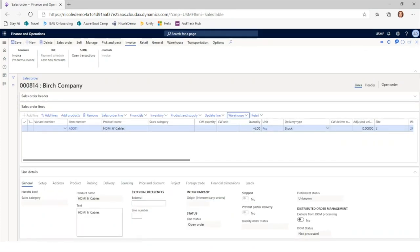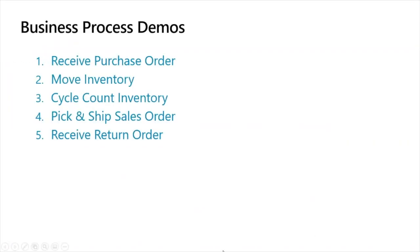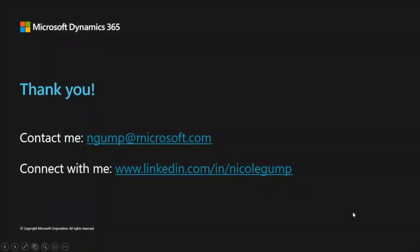That's the final process. Let me reshare the slides. We went through five fundamental processes: receiving a purchase order from a vendor, moving inventory between locations in the warehouse, doing an ad hoc spot cycle count, picking and shipping a sales order, and receiving a return against that sales order. That's all the content.